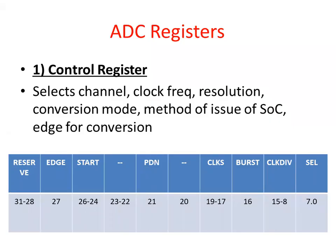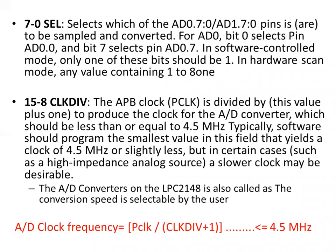Now we will see the ADC registers. The first is the control register, which includes: select channel, clock frequency, resolution, conversion mode, method of issuing SOC, and edge for conversion. Bits 7:0 select which of the AD0.7 or AD1.7 pins is to be sampled and converted. For ADC0, bit 0 selects pin AD0.0 and bit 7 selects AD0.7. In software-controlled mode, only one of these bits should be 1; in hardware scan mode, any value containing 1 to 8 ones is valid.